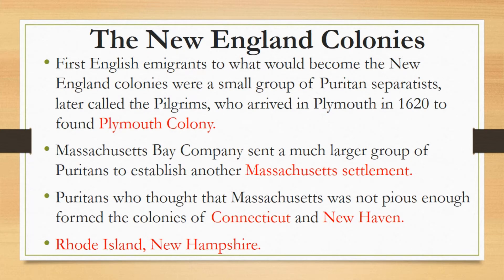As the Massachusetts settlements expanded they generated new colonies in New England. Puritans who thought that Massachusetts was not pious enough formed the colonies of Connecticut and New Haven, which combined in 1665. Meanwhile, Puritans who thought that Massachusetts was too restrictive formed the colony of Rhode Island, where everyone including Jewish people enjoyed complete religious liberty. To the north of the Massachusetts Bay Colony, a handful of adventurous settlers formed the colony of New Hampshire.